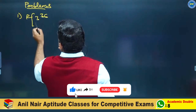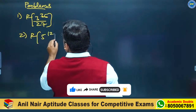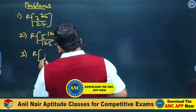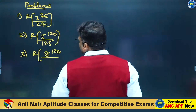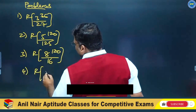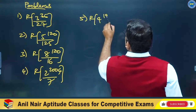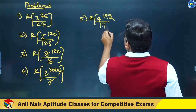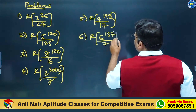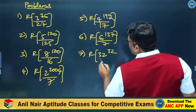Problems to solve: 3 power 36 divided by 27, 5 power 120 divided by 125, 8 power 120 divided by 16, 2 power 2004 divided by 7, 4 power 192 divided by 17, 6 power 137 divided by 7, 32 power 32 divided by 11.